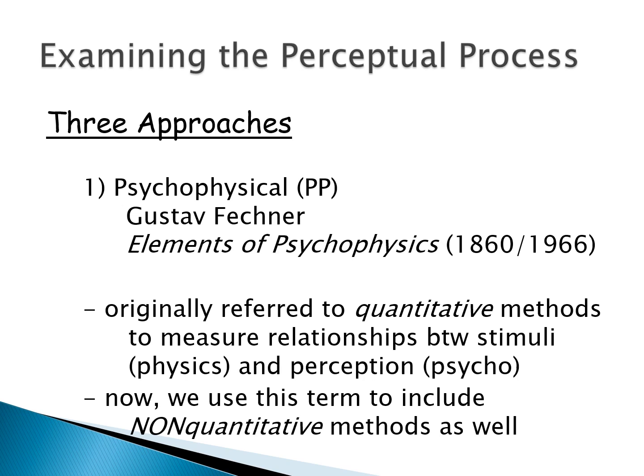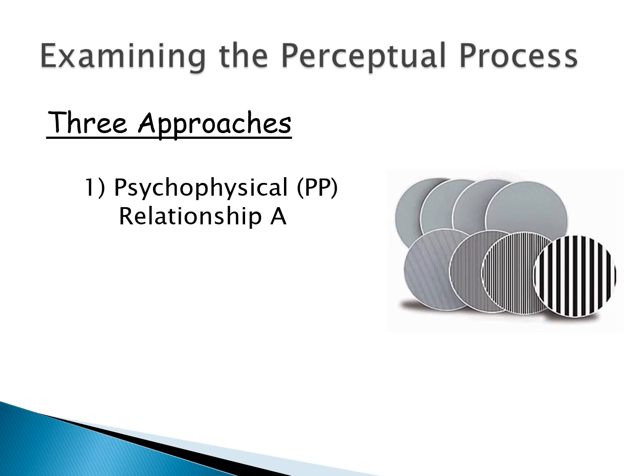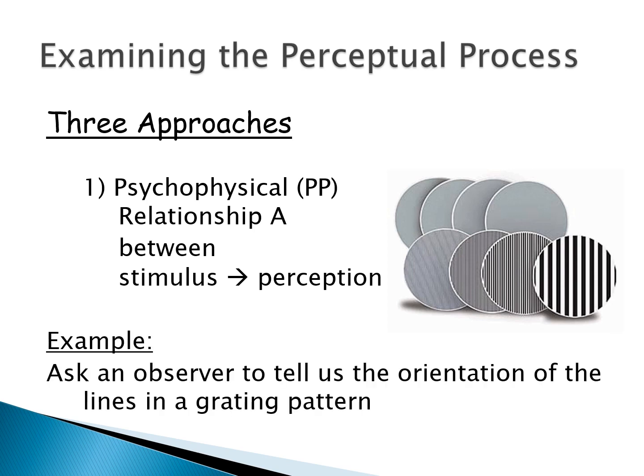Do you see it or hear it — yes or no? Looking at these three approaches, we're going to start with the psychophysical approach, or what they call Relationship A, where we're looking at the relationship between the stimulus — the physics out in the world — and the perception. In this case, we're going to ask a person to tell us the orientation of the lines in a grating pattern. We're going to come back to these grating patterns. This is a measurement of what's called grating acuity.